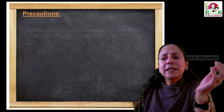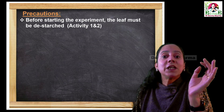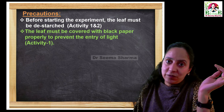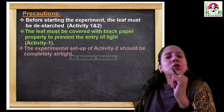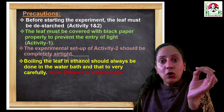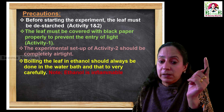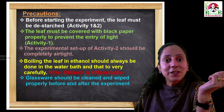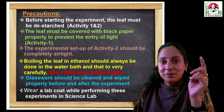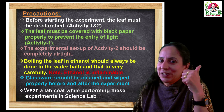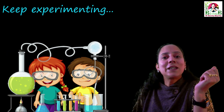When you go to the science lab to carry out these activities yourself, take care of a few precautions. First, before starting the experiment, the leaf must be de-starched in the case of activities 1 and 2. In activity 1, the leaf must be covered with black paper properly to prevent entry of light. The experimental setup of activity 2 should be completely airtight. Boiling of the leaf in ethanol should be done in the water bath and very carefully, because ethanol is inflammable. All glassware should be properly cleaned and wiped before and after the experiment. Most importantly, wear a lab coat while performing these experiments in your science lab. Now I'm sure you are ready to go to the lab — keep experimenting and continue learning!